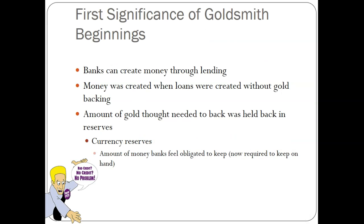The significance is that banks can create money through lending. Even though goldsmiths didn't always have the gold, everybody believed they did when they got the receipt. Banks can create money if people think it's worth that amount — it's acceptable, legal, used as a medium of exchange and store of value. Banks can lend money into existence: you can buy a soda for a dollar even though there's no gold backing it. Money is created when loans are created.